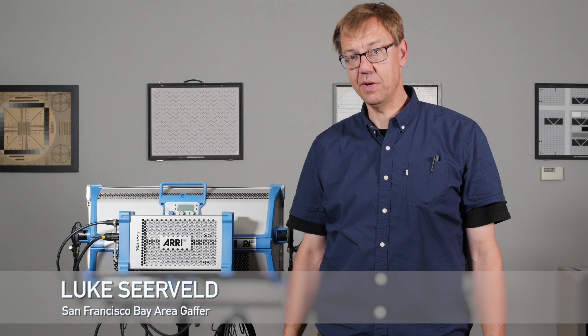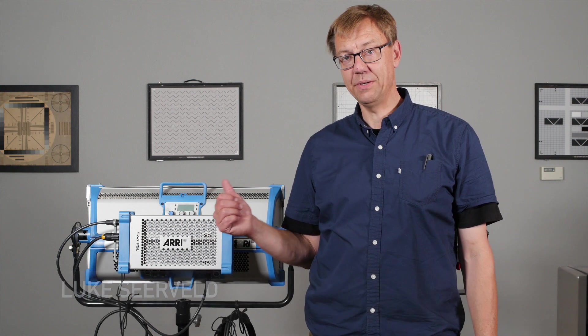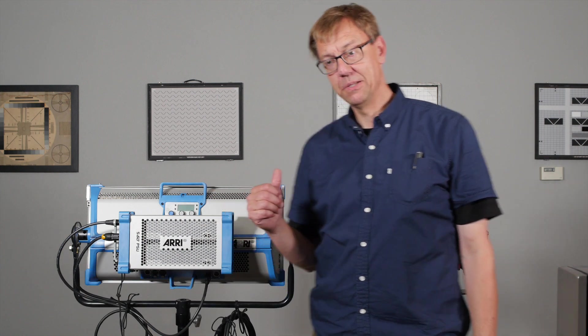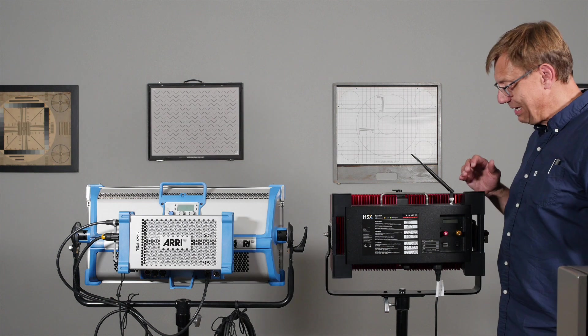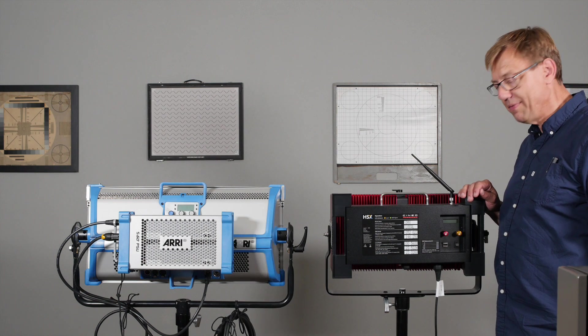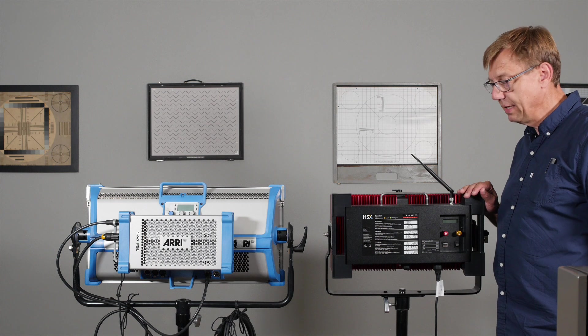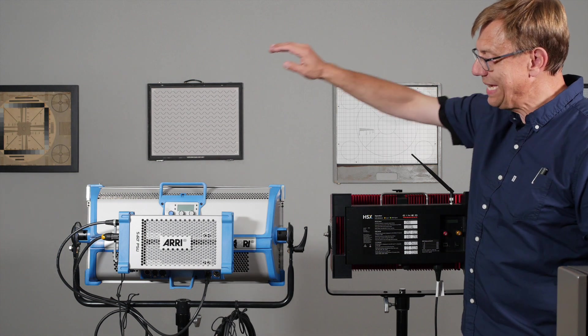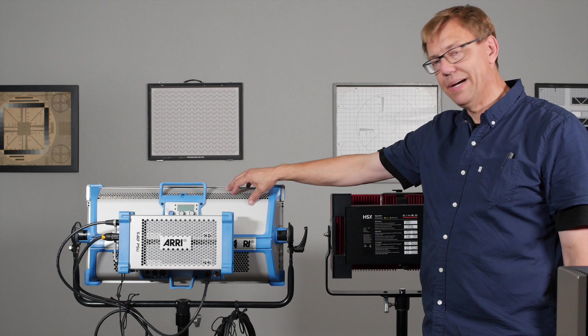Hi, I'm Luke Cerveld. Welcome to another episode of Meet the Gaffer. Today we're going to compare two lights. One light's been around for a while and the other light is relatively new on the scene. So the new one is this HSX, a bi-color soft light by Cineo Lighting, and we're going to compare it to the S60 SkyPanel by Arri.